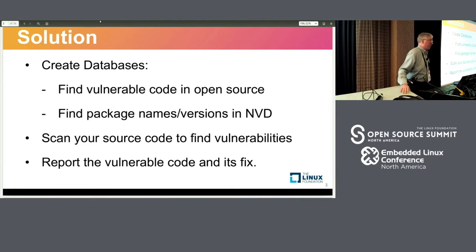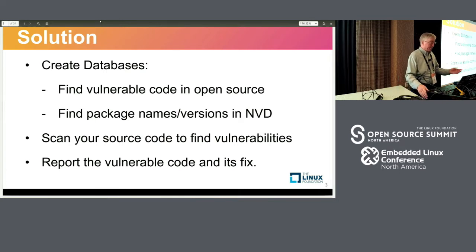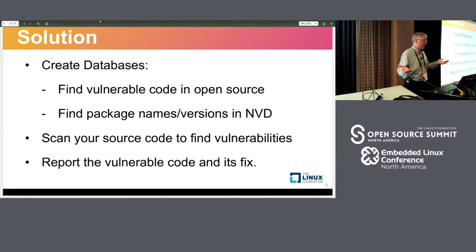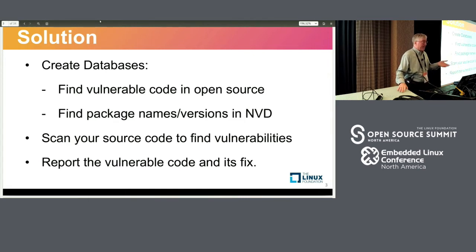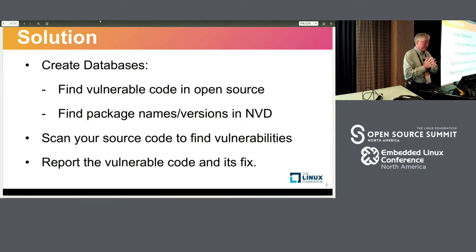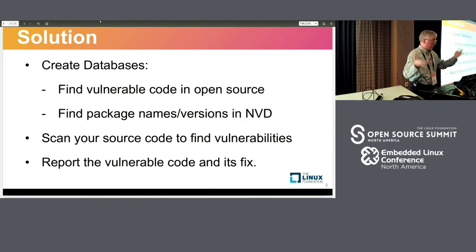At Canvas Labs we came up with an interesting solution. The idea is to take the vulnerabilities known in open source repositories and create a database containing an archive of that open source software. This database can be maintained in real time and forms the universe of software where you think your code may come from, allowing you to match your code against it to find corresponding matches.